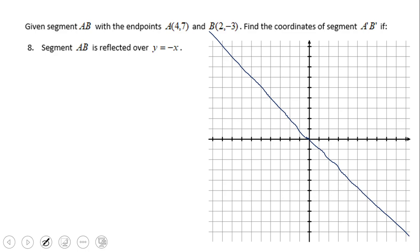We can use the same point B at (2, -3). That is the point B, which reflected over y equals negative x is going to be right there. So (2, -3) becomes (3, -2).